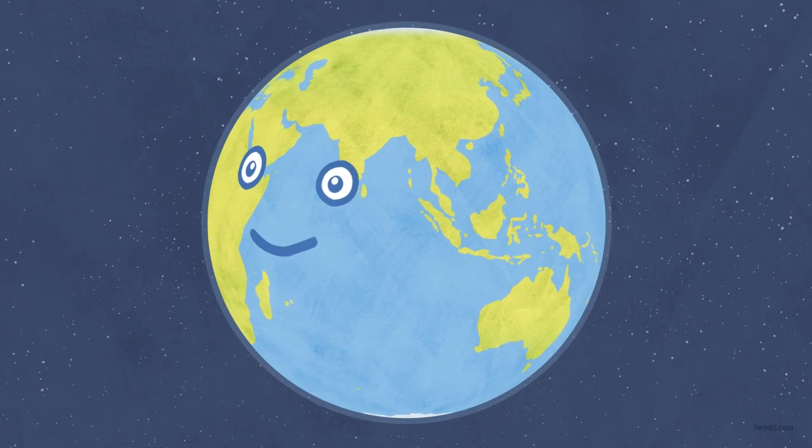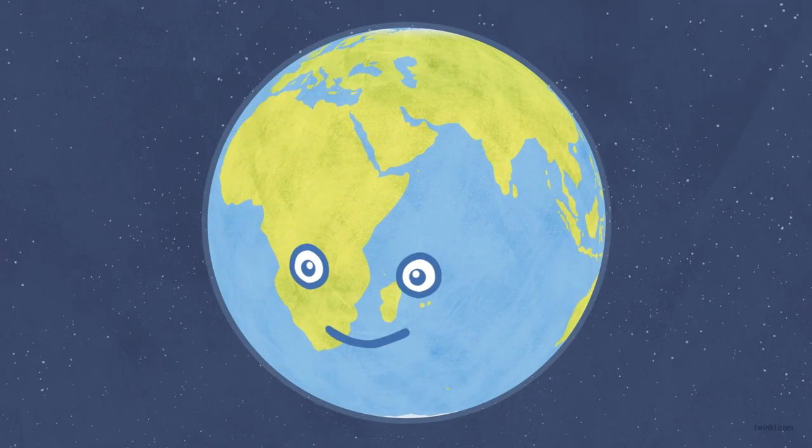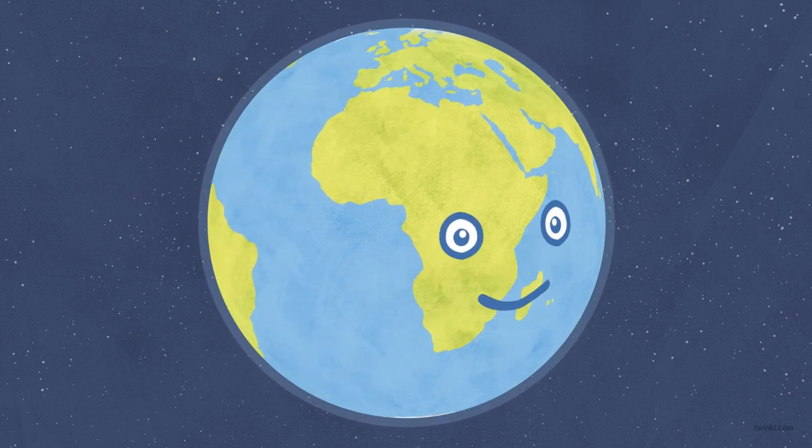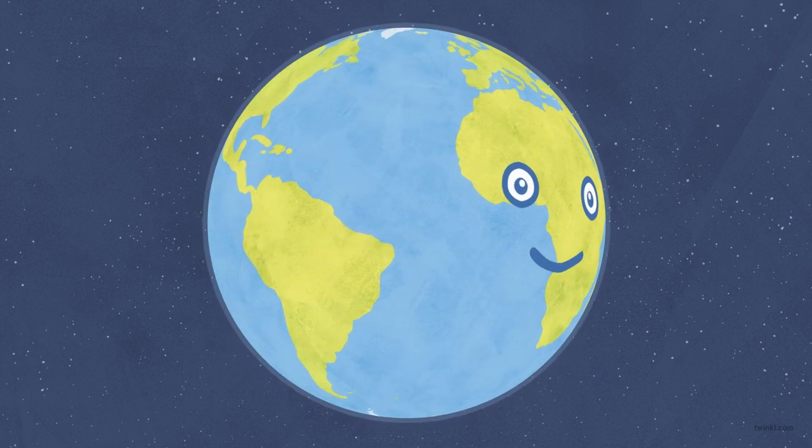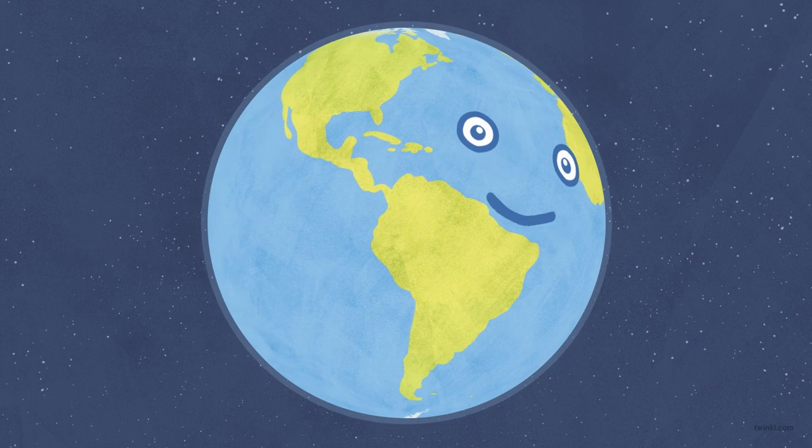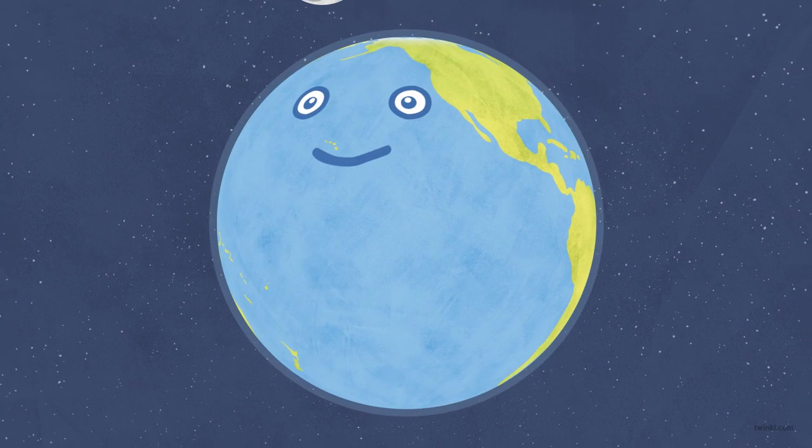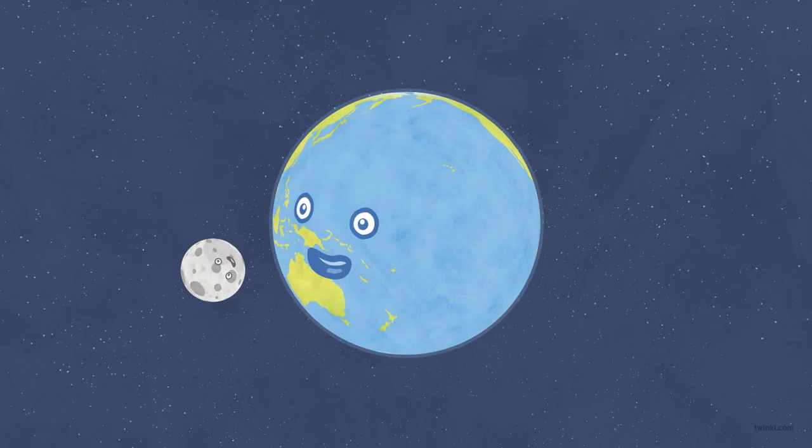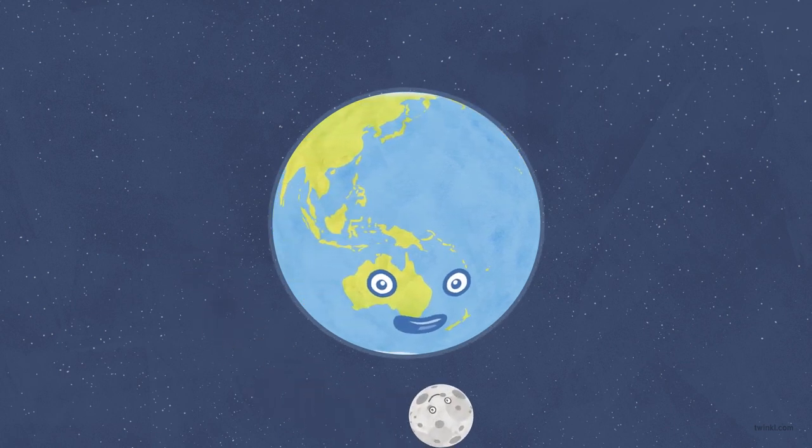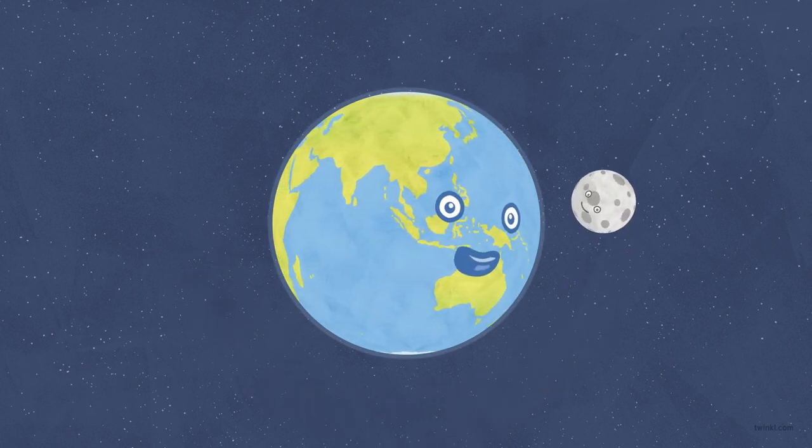Each of the planets orbiting the Sun also spins or rotates. The Earth takes 24 hours to rotate on its axis. The planets have their own gravity, and some have objects such as moons orbiting around them. The Earth has one moon which takes 28 days to complete an orbit around our planet.